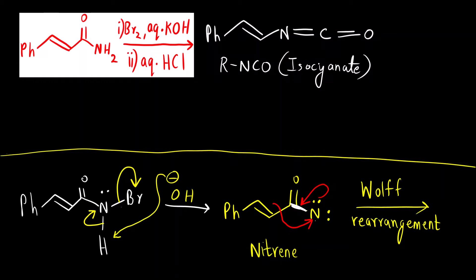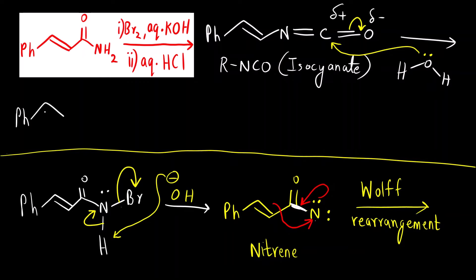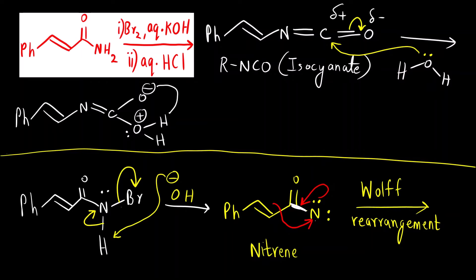The next step: water is present in the system and attacks the isocyanate. The isocyanate has δ⁻ and δ⁺ centers. Water attacks, giving Ph-NH with C–O single bond becoming single bond, O⁻, and a positive charge on oxygen since water donated a lone pair. Then O⁻ picks up the H⁺ ion, giving OH.